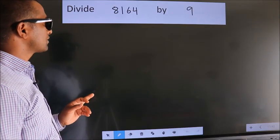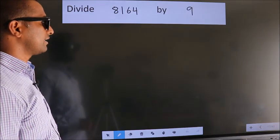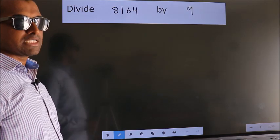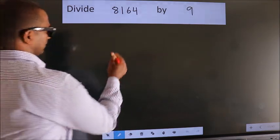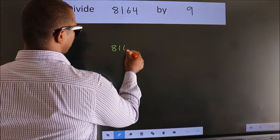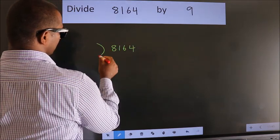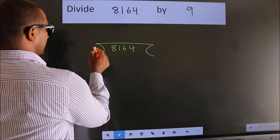Divide 8164 by 9. To do this division, we should frame it in this way: 8164 here, 9 here.